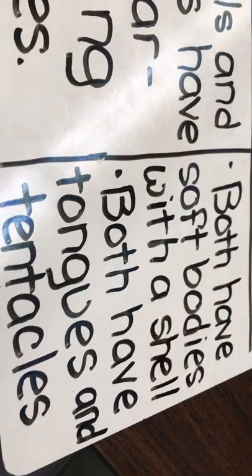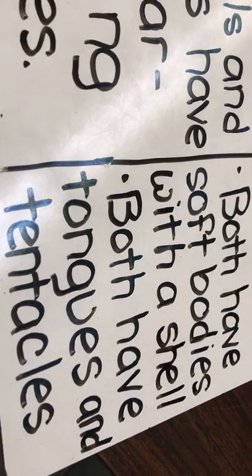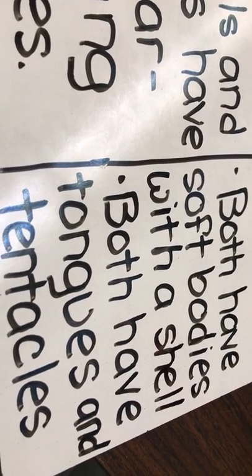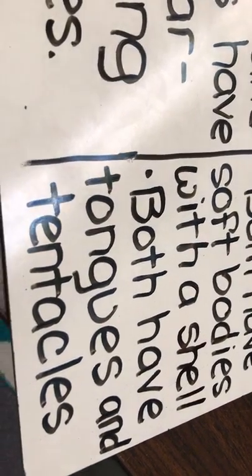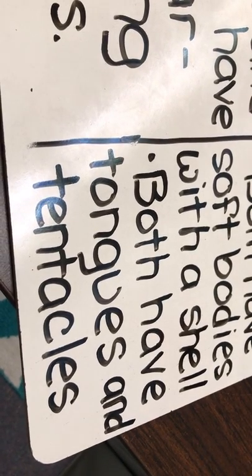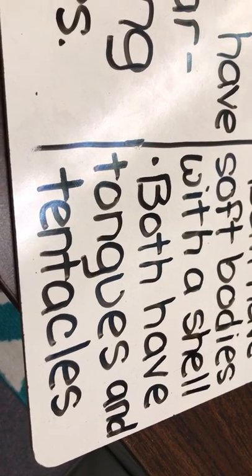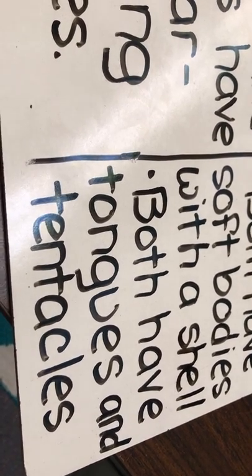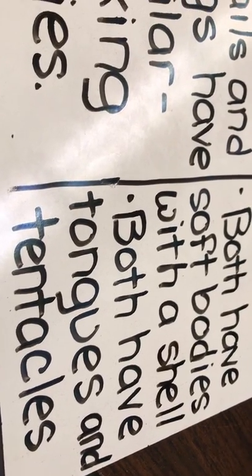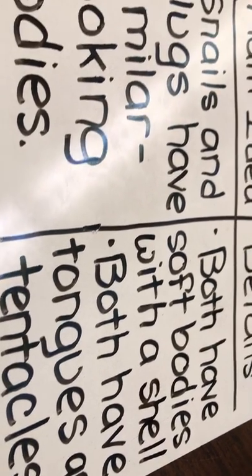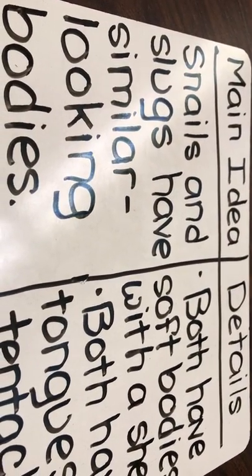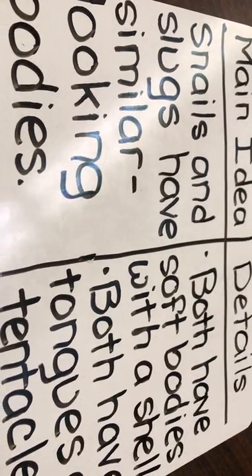I said that both snails and slugs have soft bodies with a shell, and both snails and slugs have tongues and tentacles. Today you are going to practice figuring out main idea and details in each section of this book.